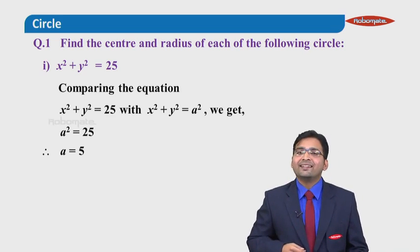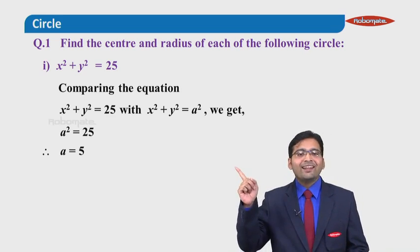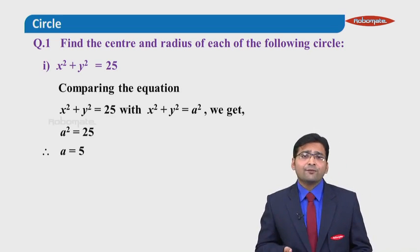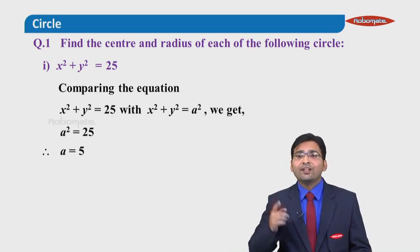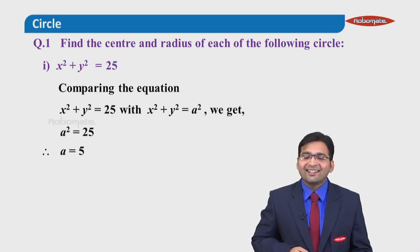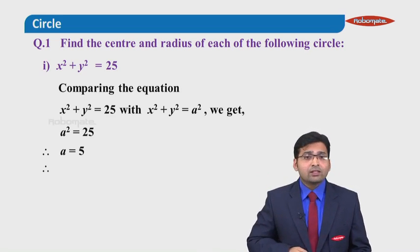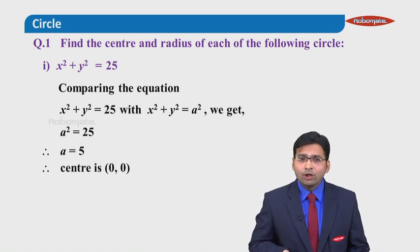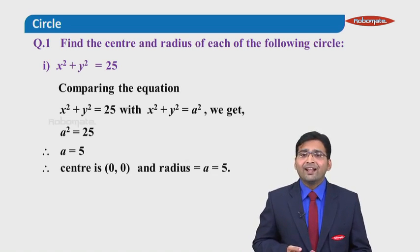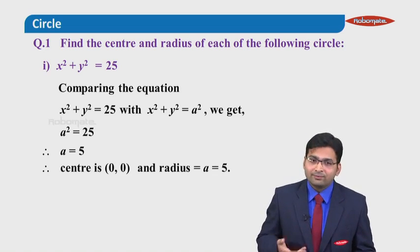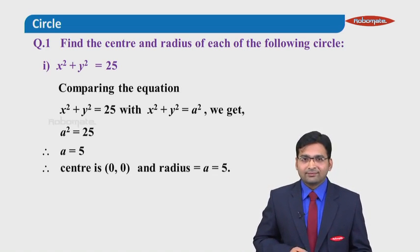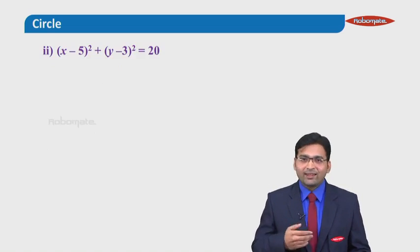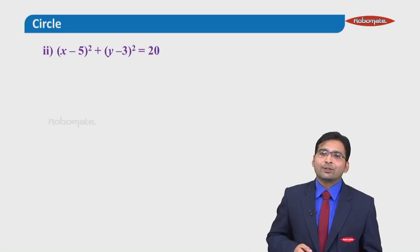If a squared is 25, then a equals 5, and 'a' is the radius. So the radius of the circle is 5. Since it is a standard circle, the center is at the origin, that is (0, 0), and the radius is 5.